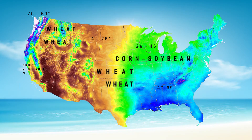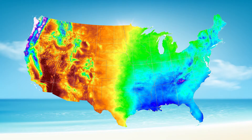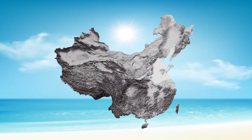The Central Valley of California, where precipitation ranges from 20 inches to 5 inches a year, produces fruits, vegetables, and nuts. One third of the United States has an annual precipitation of less than 20 inches, and one eighth less than 10 inches.